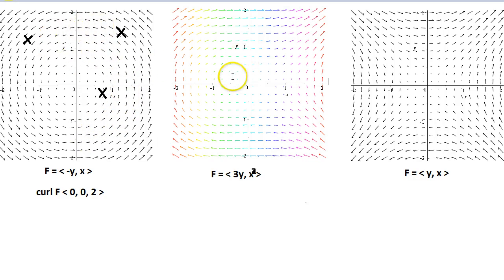But if we move to the second example, depending on where we're at, we'll have different strengths of spin. We have the qx minus py there is 2x minus 3. So the curl for the second one is going to be 0, 0, and the function 2x minus 3.